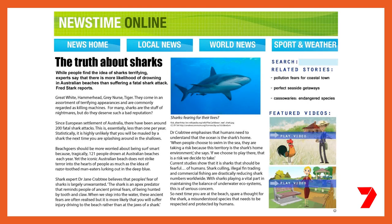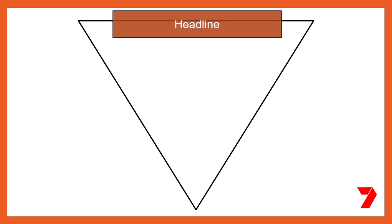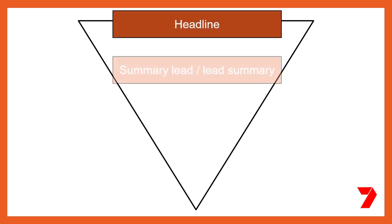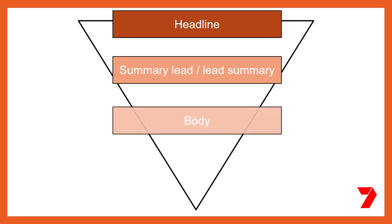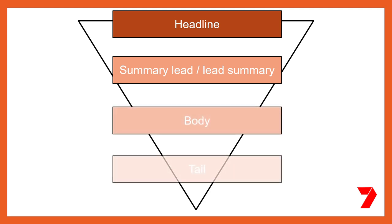An online or written news report has a headline, a summary lead or lead paragraph. Remember, a paragraph contains a group of sentences that connect to explain a central idea — plus a body and a tail. These text features are the basic building blocks of a news report. Often a written news report may also contain other features such as images, maps or diagrams.